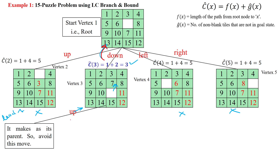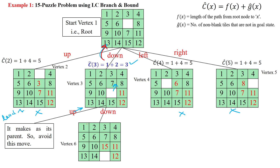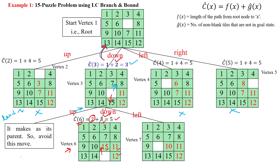When exploring node three, moving upward would return to the parent state, so we avoid that direction. Moving downward gives node six at level two — when moving down, tile 15 goes up. Cost of node six: path length is two, misplaced tiles are three, so cost equals five. Moving left gives node seven: path length two, misplaced tiles are three — ten comes into position — cost equals five.